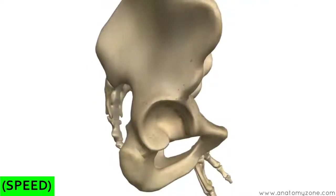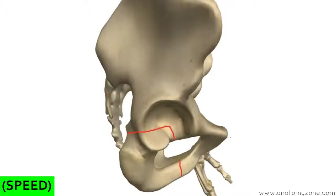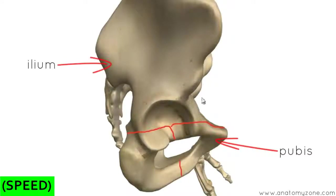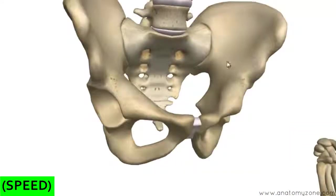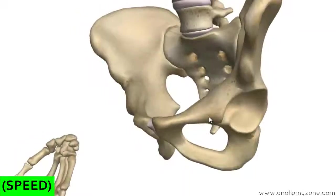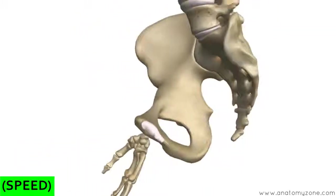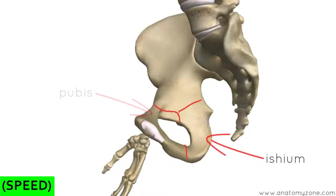Looking laterally at the hip, the ischium lies postero-inferiorly, the pubis is anteriorly, and above you've got the ilium. Rotating the model to look medially, anteriorly we've got the pubis, posteriorly we've got the ischium in that region, and above it the ilium.